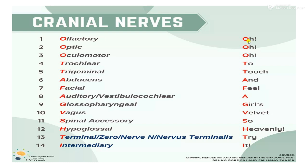So the first letter is O — Olfactory nerve. Olfactory nerve comes under the division of cranial nerves. The second one is Optic nerve, so for Optic we use O. For Oculomotor nerve we also use O.